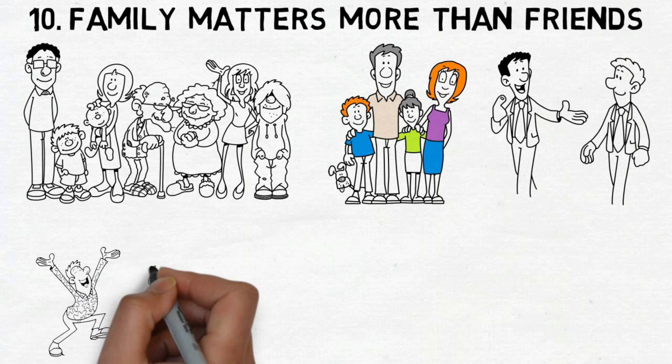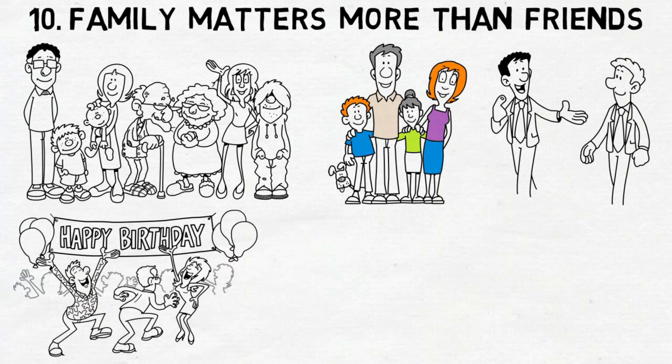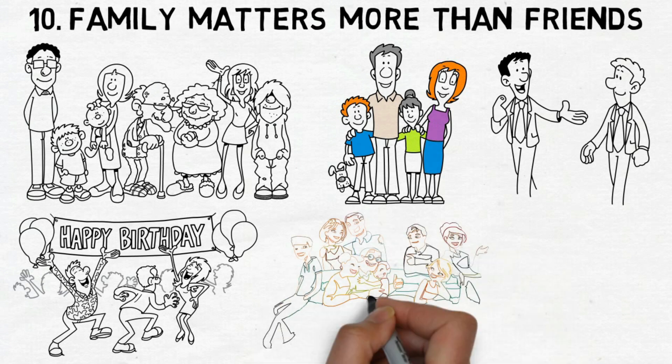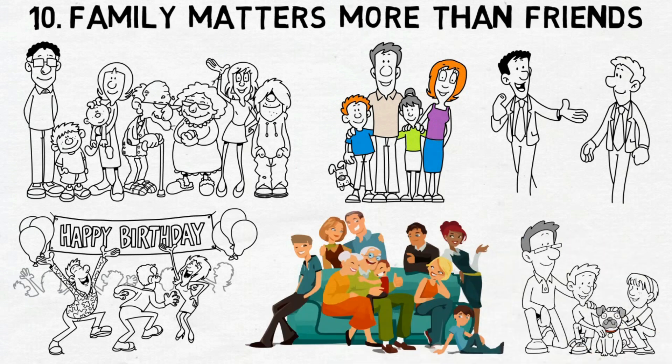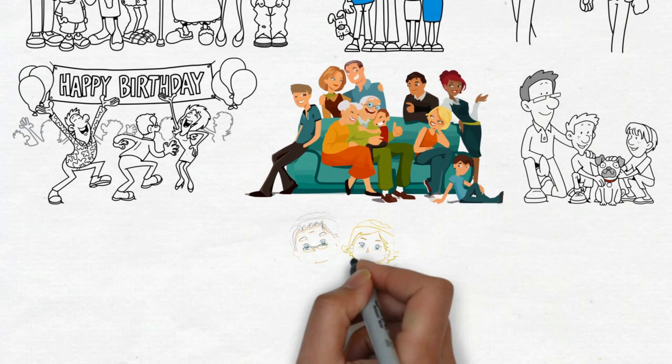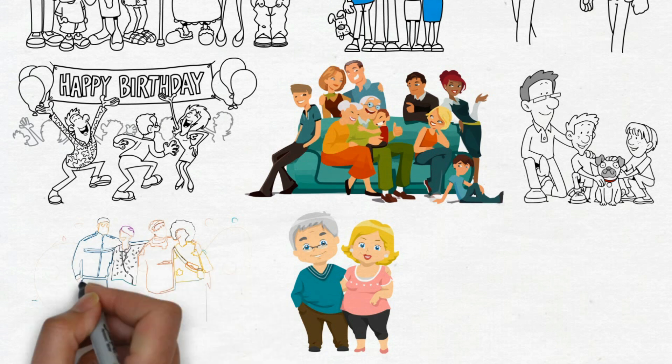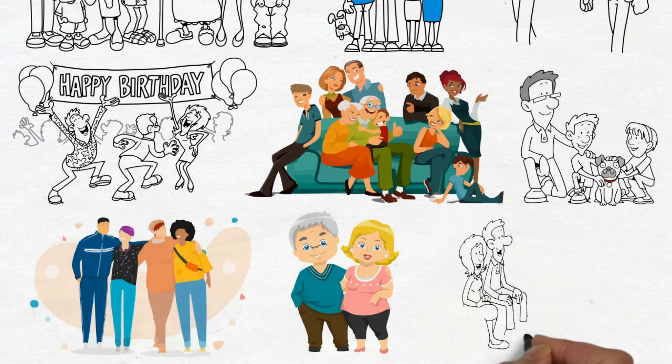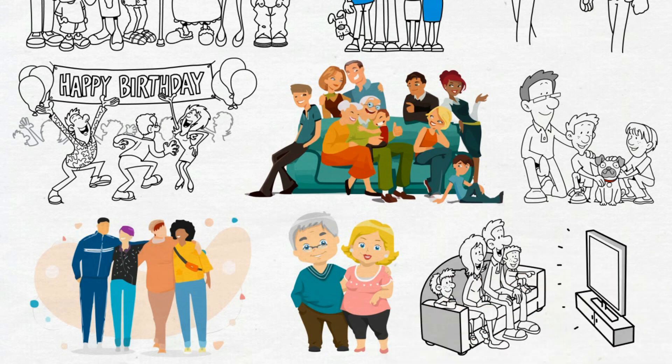While friends provide crucial support and companionship, it's unlikely that they would willingly risk themselves for you. Family, on the other hand, is the one group that would genuinely prioritize your well-being over their own. This is a bond that should never be taken for granted. Engage with your parents while you still have the opportunity. Keep your connection with your siblings alive and thriving. And, of course, invest quality time with your children, as they depend on your presence more than anything else.